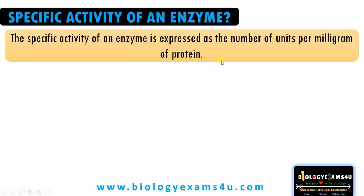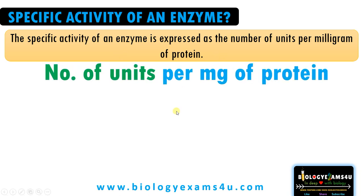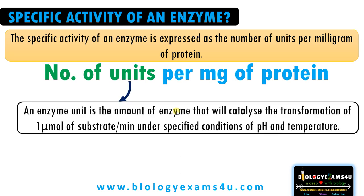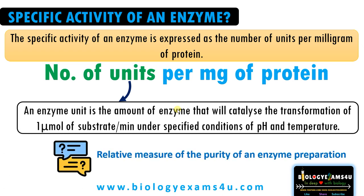The next question is what do you mean by number of units per milligram of protein? An enzyme unit is defined as the amount of enzyme that will catalyze the transformation of one micromole of substrate per minute under standard conditions. So specific activity is actually a relative measure of the purity of an enzyme preparation.